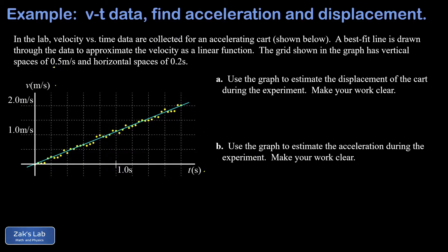We're told that the grid spacing here is 0.5 meters per second per space in the vertical direction and 0.2 seconds in the horizontal direction. We've presumably collected some data using a motion sensor here and then we've applied a best-fit line to that data. What we're trying to do here is estimate the displacement of the cart that was moving with this v-t data.